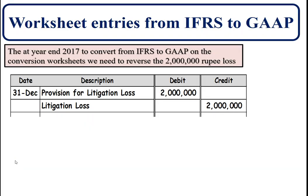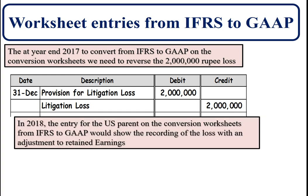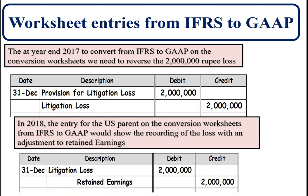At the end of 2017, to convert from the international standard to GAAP, the first thing we need to do is back out the loss and remove the liability of two million rupees — the reserve that was set up under the international standard but would not have been set up under GAAP. In 2018, since they recorded just one million, we have to record the other two million so that we are now complying with GAAP, and that two million goes against retained earnings because it was recorded in the prior year.